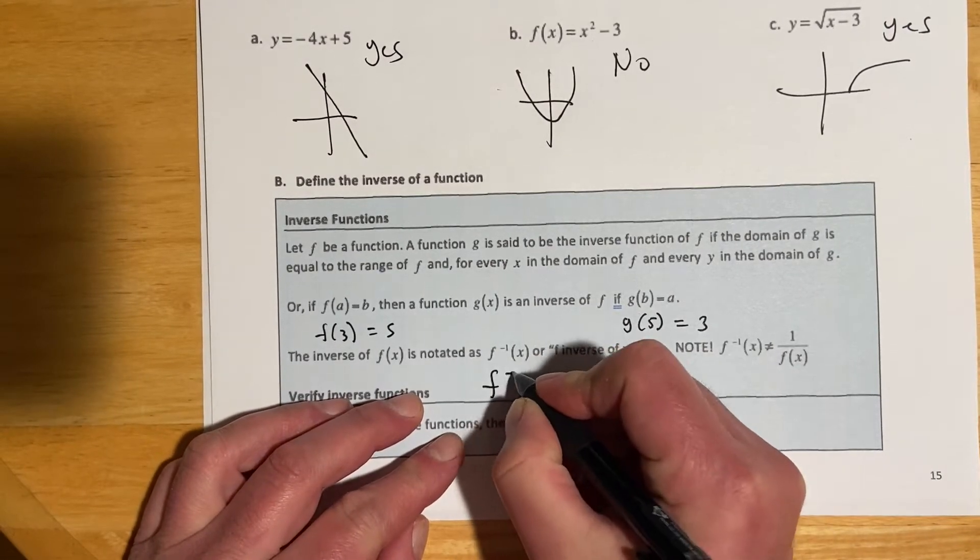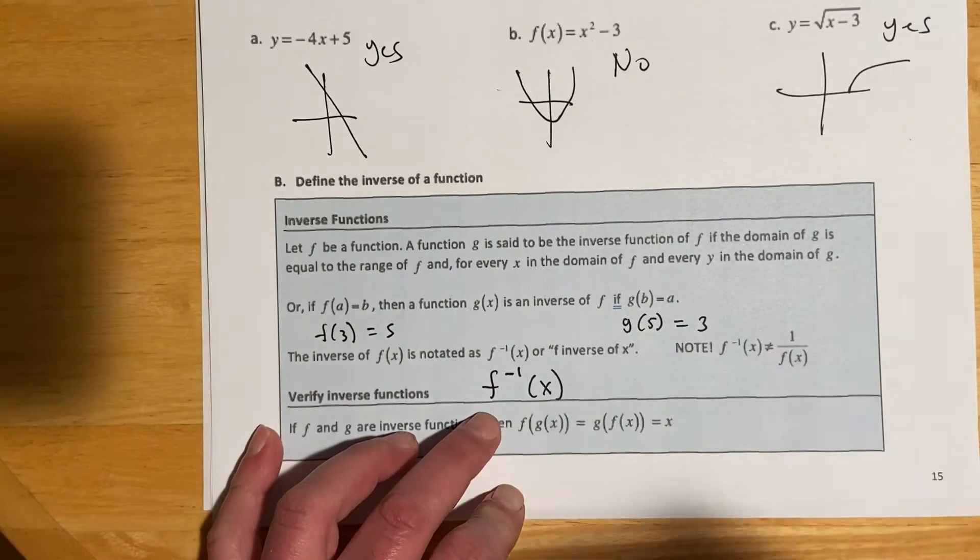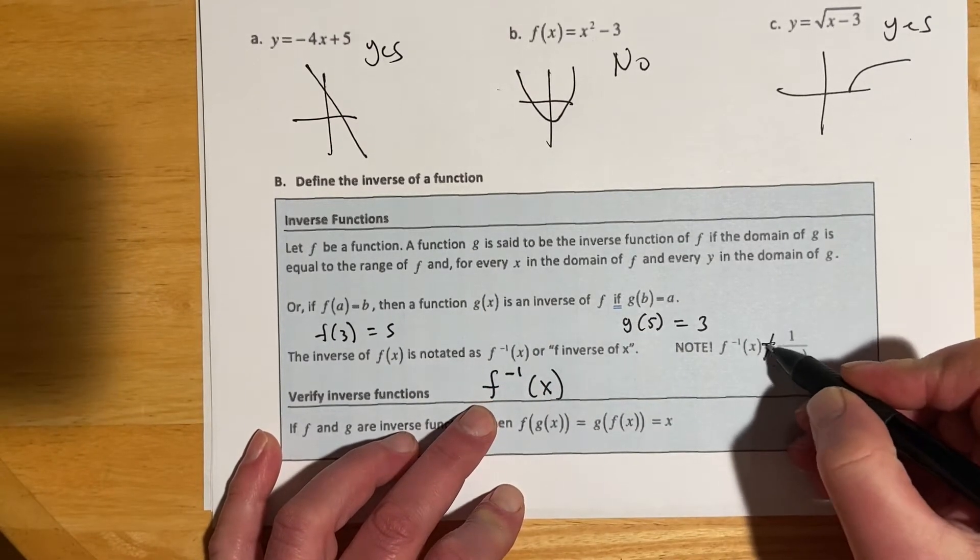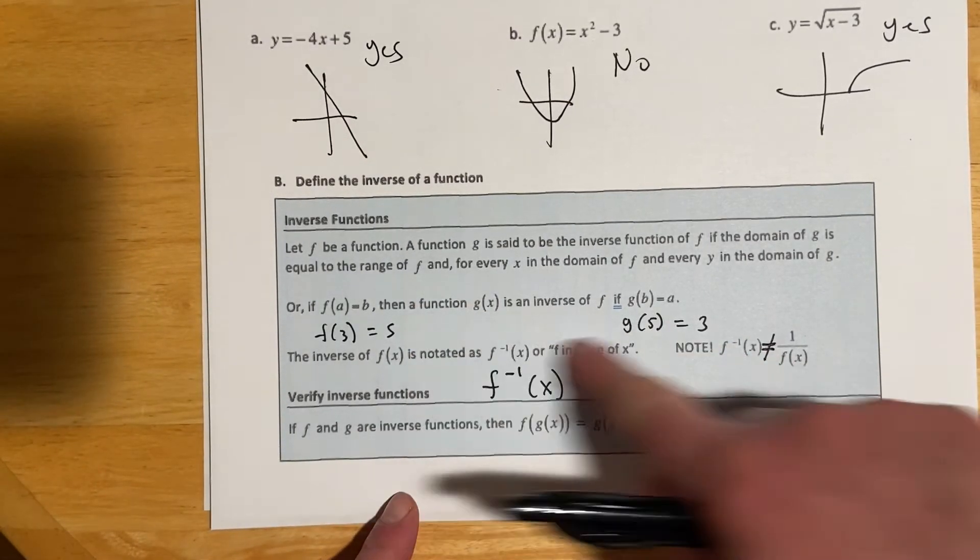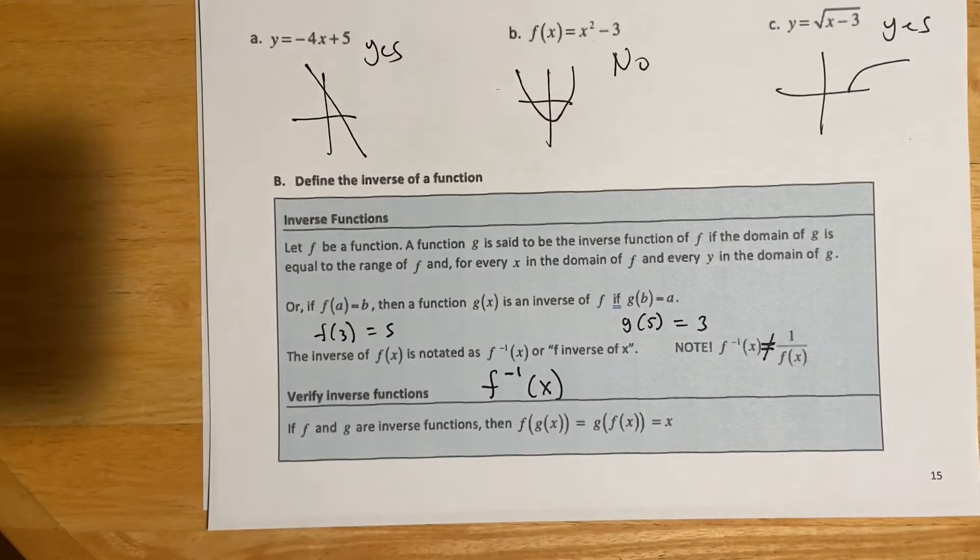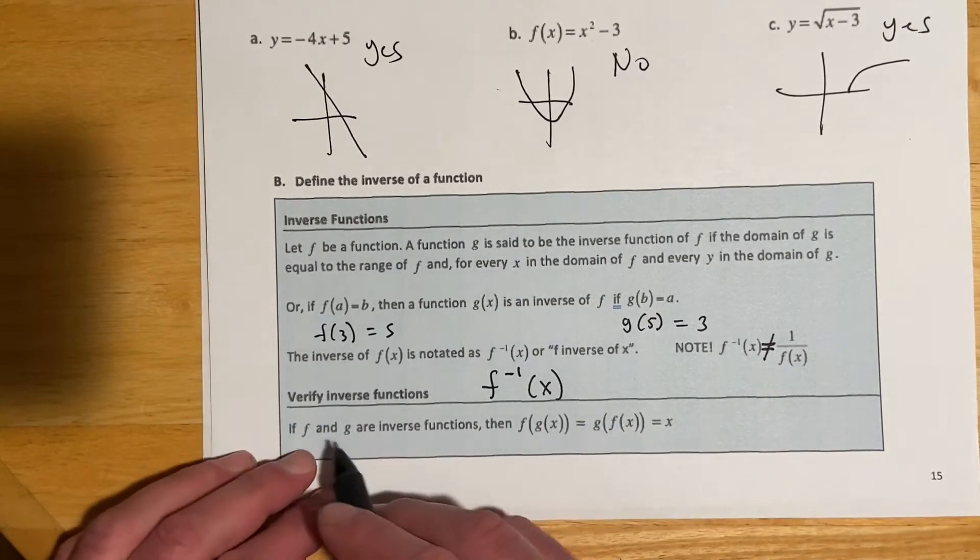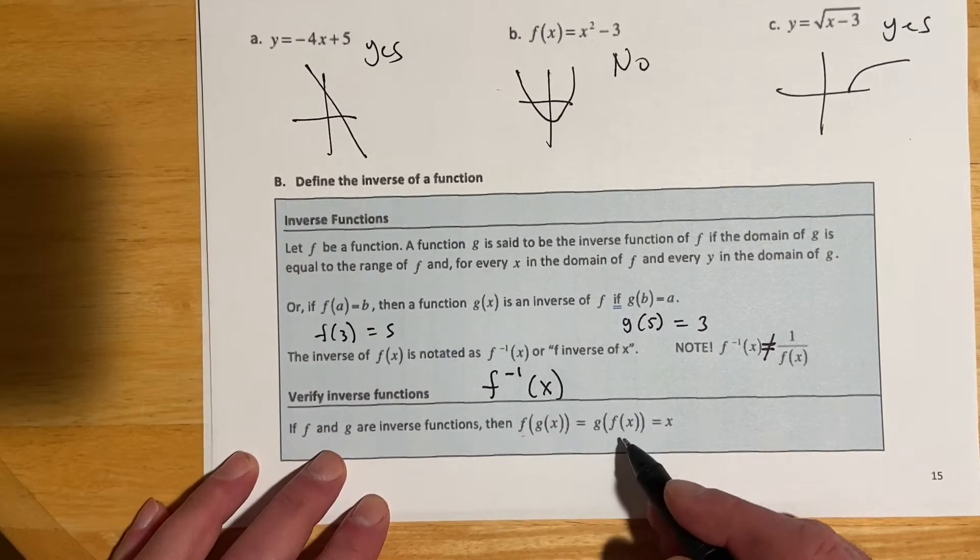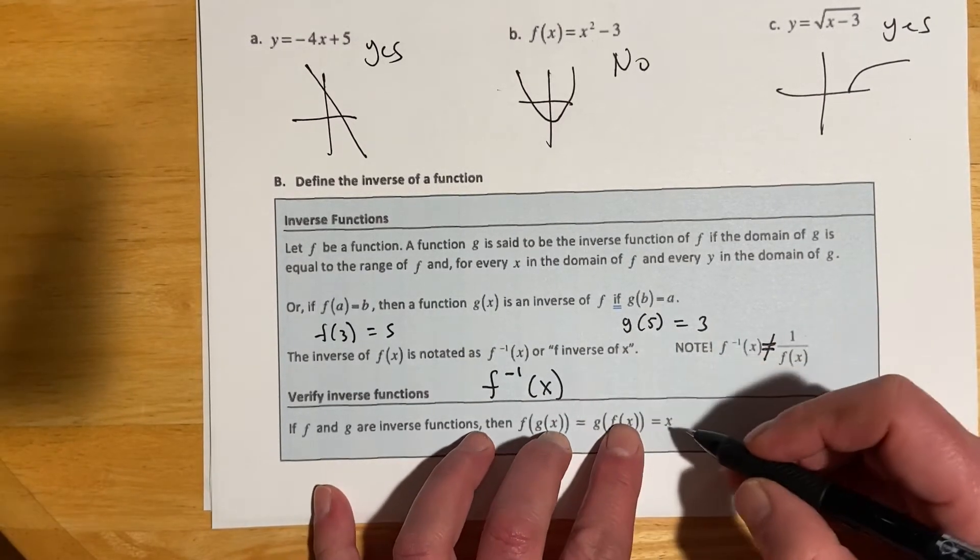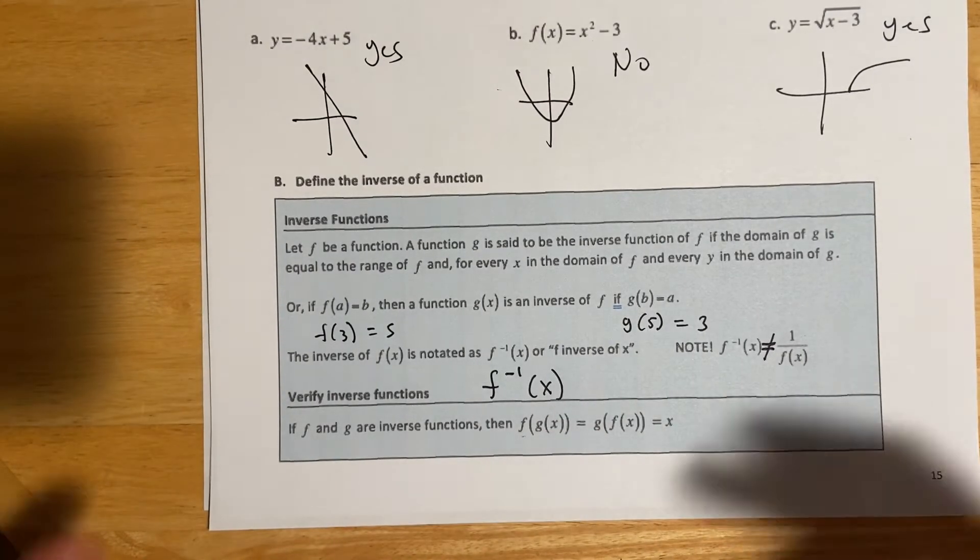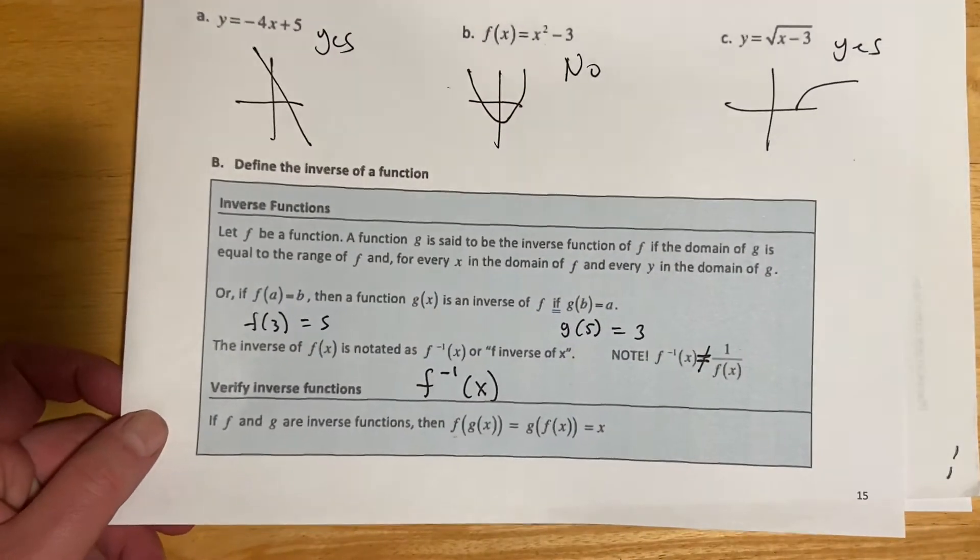The notation, f inverse x - a lot of times people will look at that and think of a negative exponent, and it is not anything to do with a negative exponent. It just reads f inverse x, which is this idea - the function that has the exact opposite domain range. To verify if two functions are inverse to one another, you do the composition, which is what we just did in the last section. If we do f of g of x, and then we do g of f of x, and both times it comes out to just plain x, then those two functions are inverse to one another.